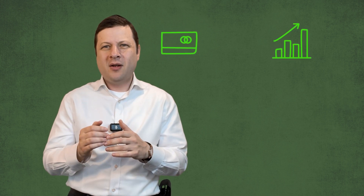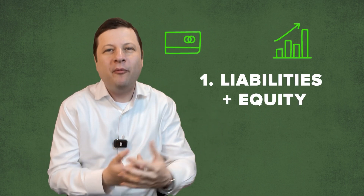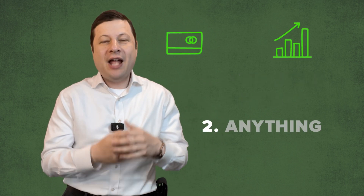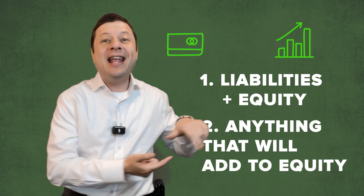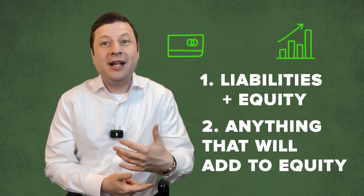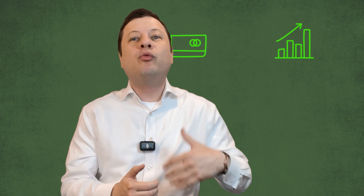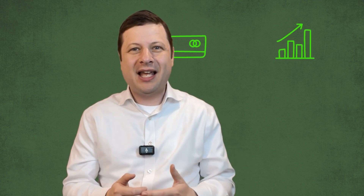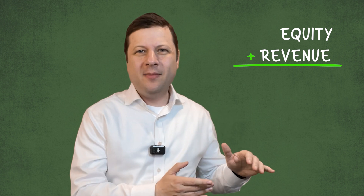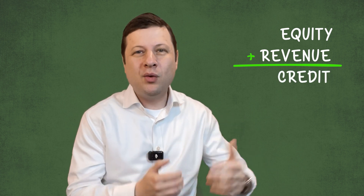What's on the right side? Liabilities and equity — where the assets come from. And anything that will add to equity, like net income, retained earnings, revenue, or anything that will reduce assets, like selling an asset. So revenue will add to equity, which is a credit. That's why revenue is a credit.